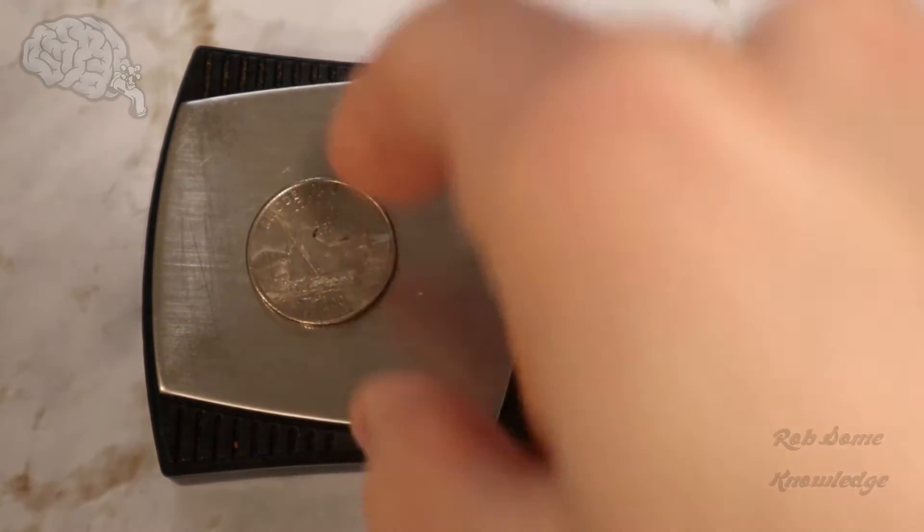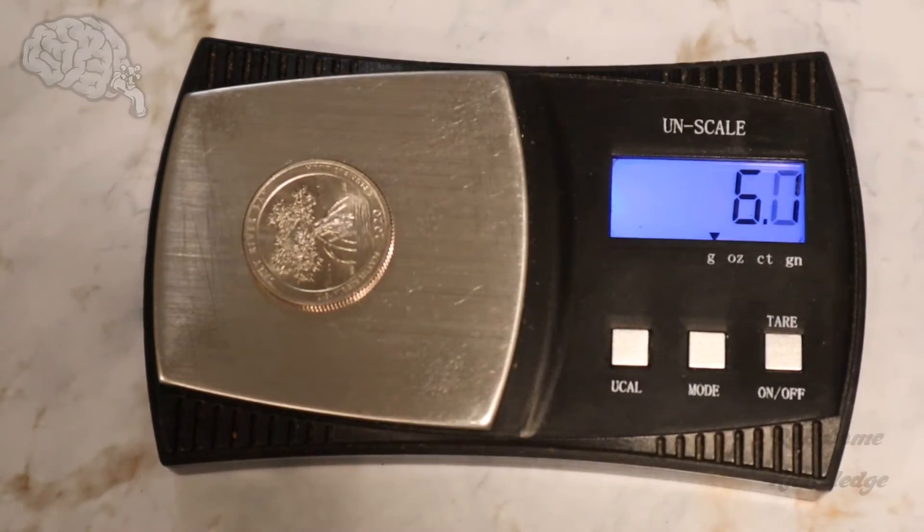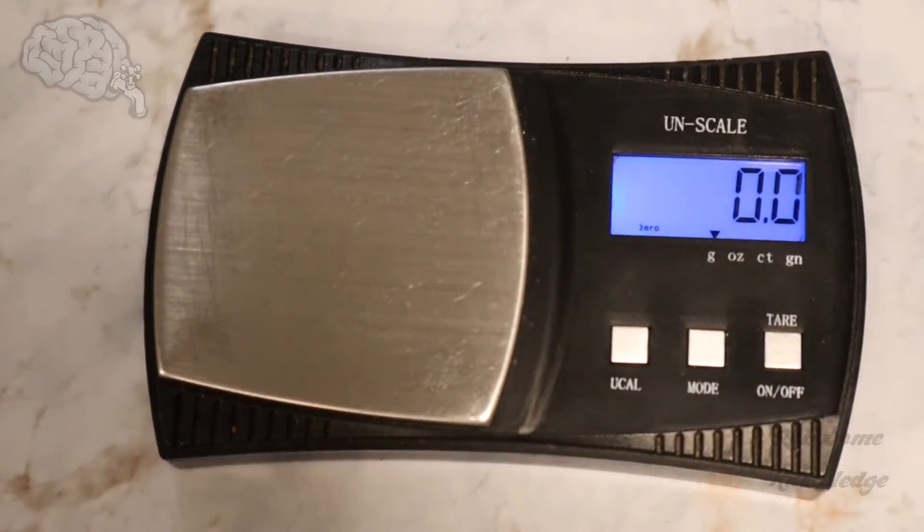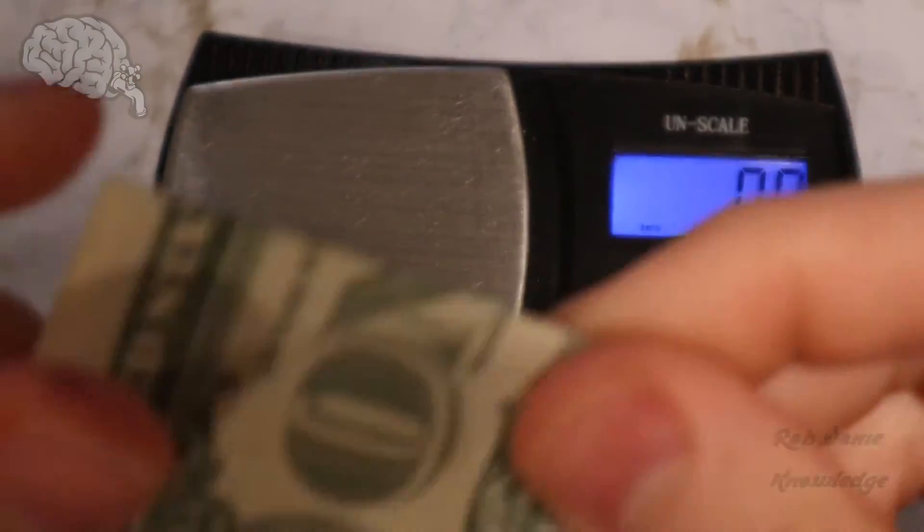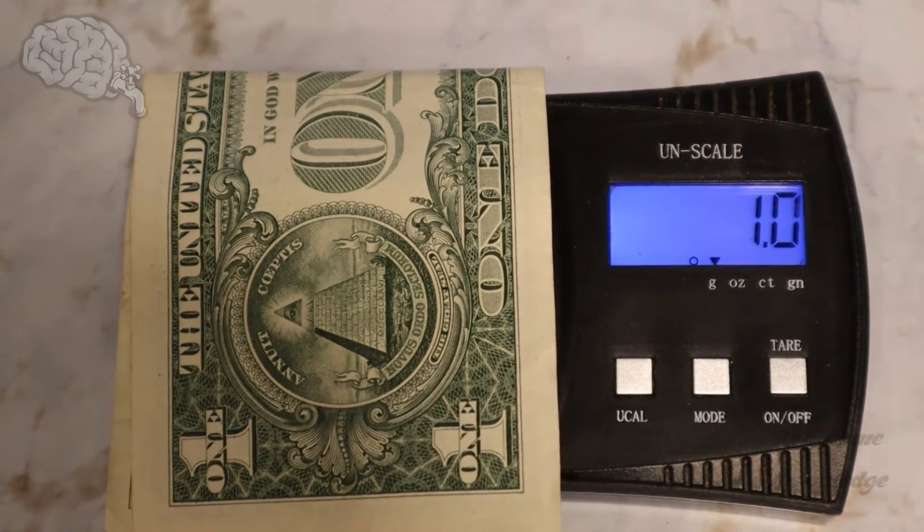And the quarter should be 5.6. Just like so. And here's another quarter as well. 5.6. And then also all of the dollar bills should be one gram exactly. So there you go.